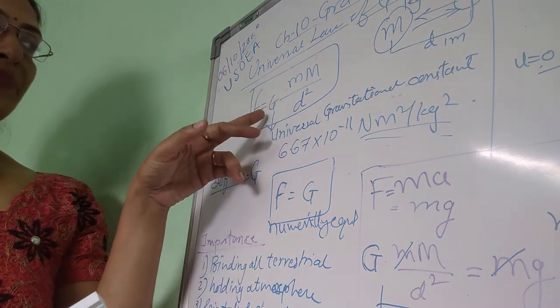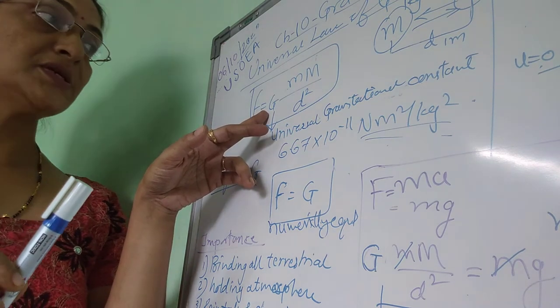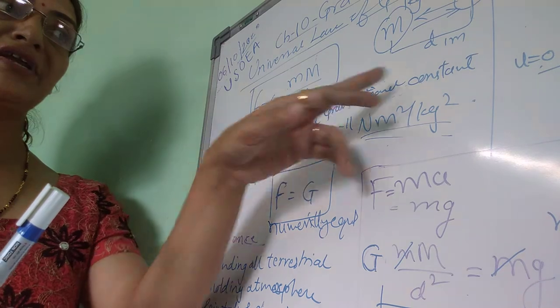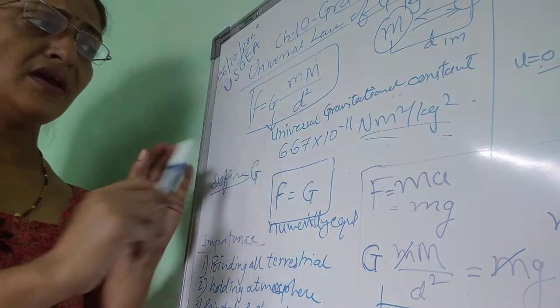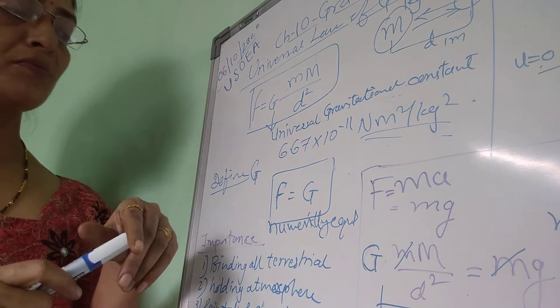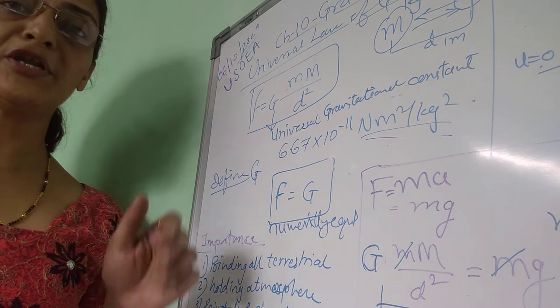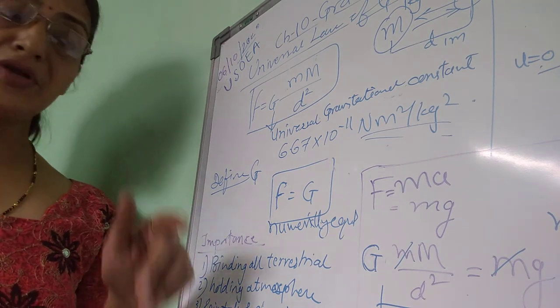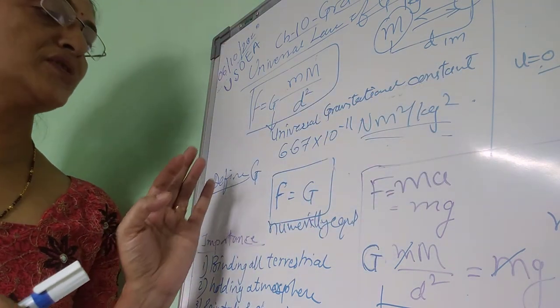To avoid that proportionality sign, we have kept here proportionality constant G, which is known as the universal gravitational constant. Its value was given by Henry Cavendish and it was observed and accepted all over the universe: 6.673 × 10⁻¹¹ newton meter square per kg square. How to find out this unit, that also we have seen.